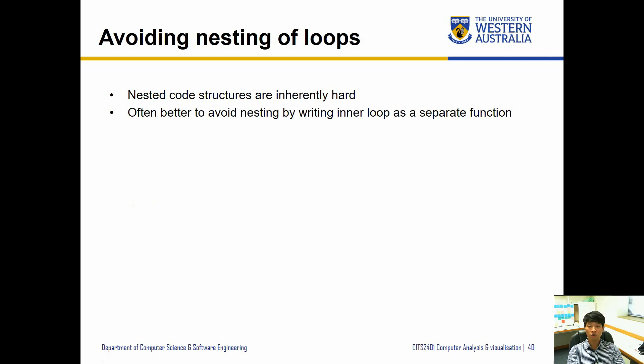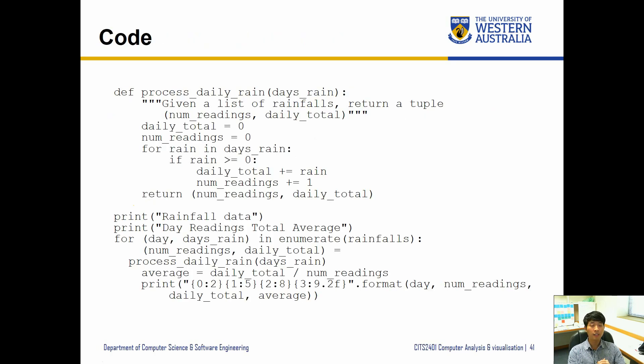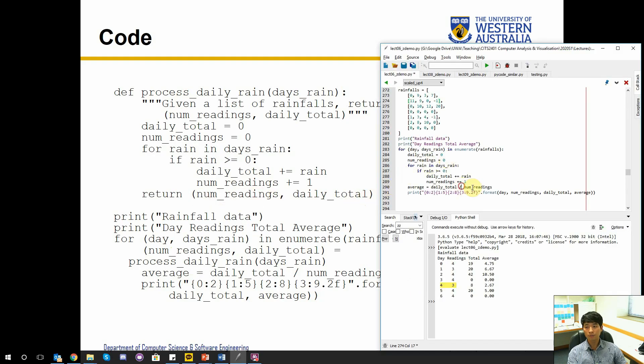So if we restructure that, then it can look kind of like this. So here for day, days_in_rain in enumerate, what we're going to do is call a function called process_daily_rain and then store the output as num_readings and daily_total. And then we can just print out after calculating the average. And inside our process_daily_rain, what we can do is calculate what we had before and then return the num_readings and daily_totals.